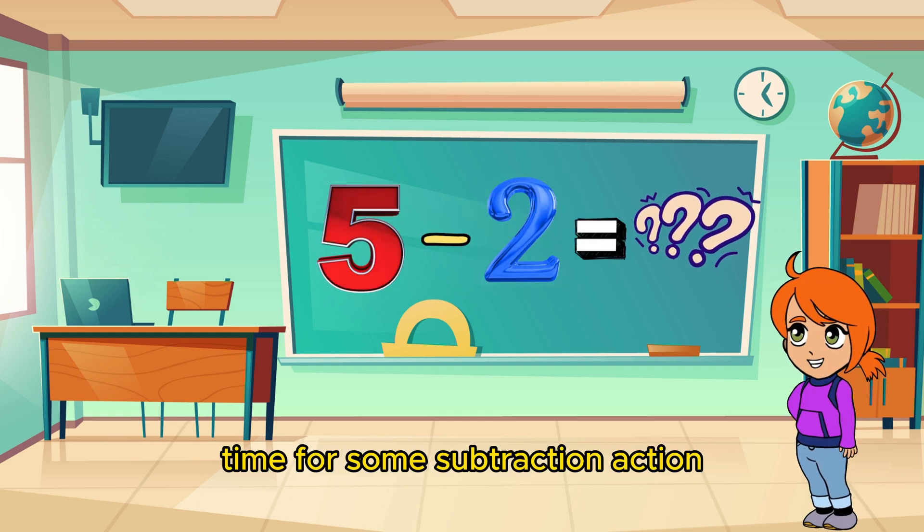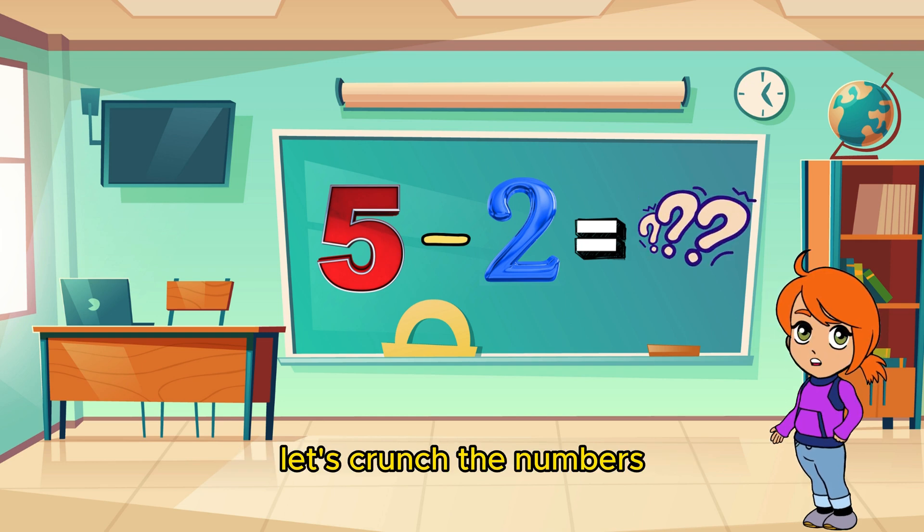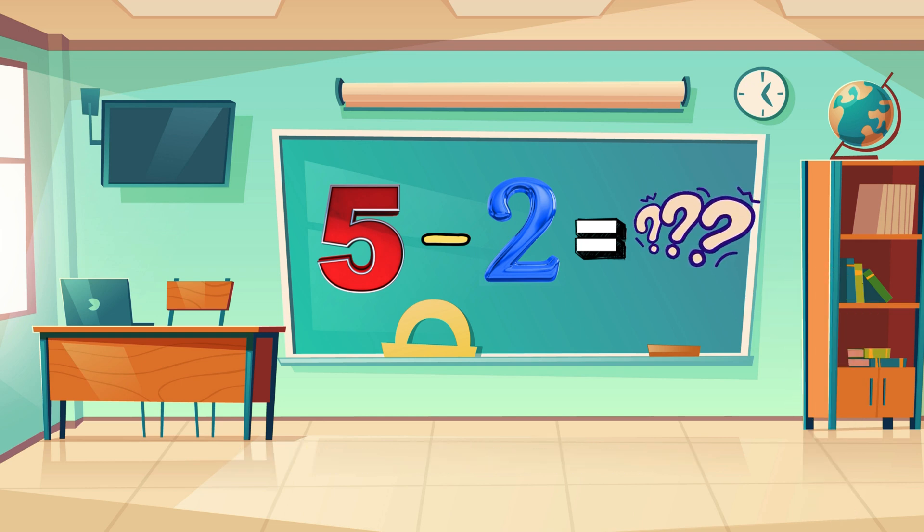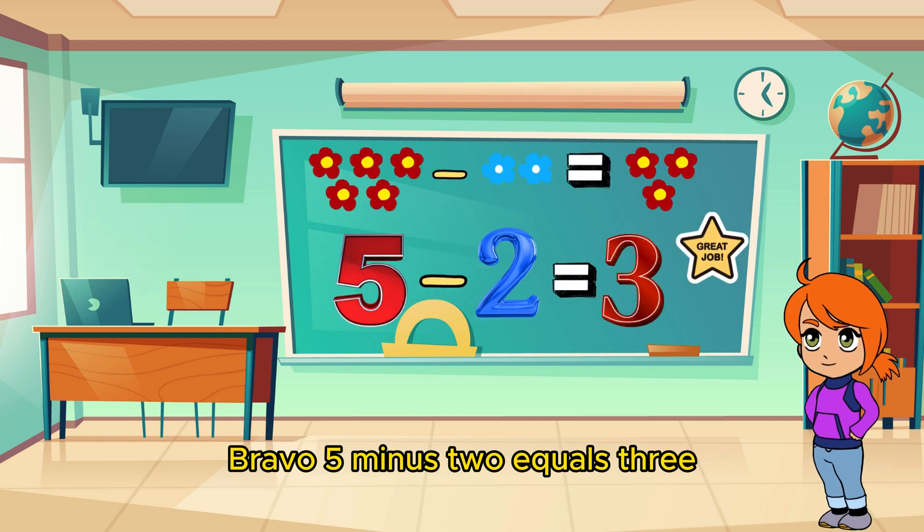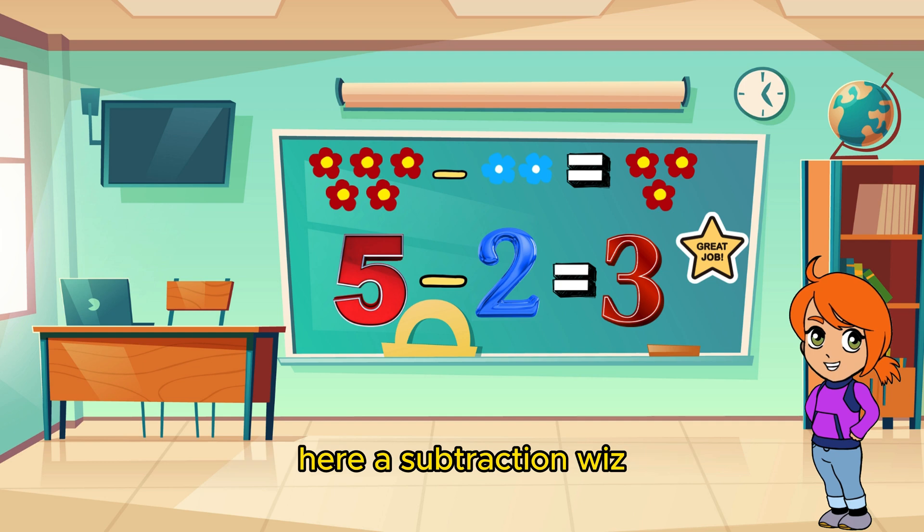Time for some subtraction action. What's 5 minus 2? Let's crunch the numbers. 5 minus 2 equals 3. You're a subtraction whiz.